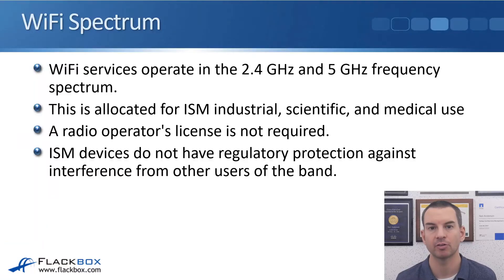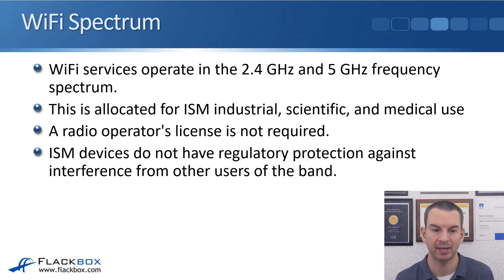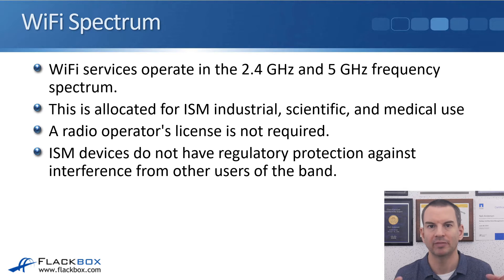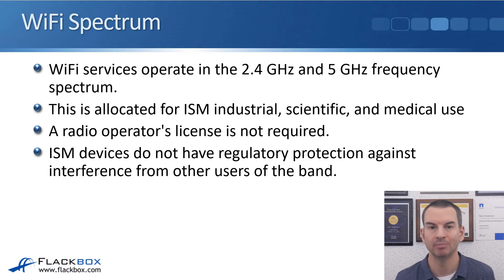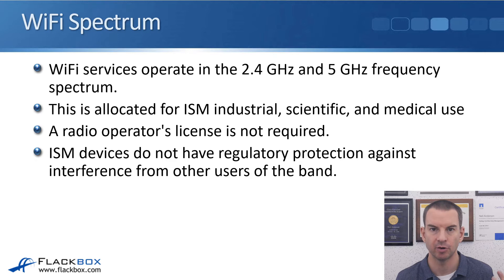In this lecture, you'll learn about RF — that's radio frequencies — and channels. Wi-Fi services operate in the 2.4 GHz and 5 GHz frequency spectrum. That's allocated for ISM: industrial, scientific, and medical use. Because of this, a radio operator's license is not required, and ISM devices do not have regulatory protection against interference from other users of the band.